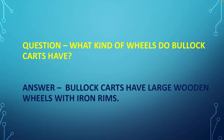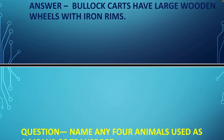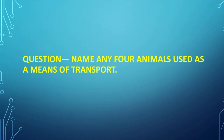Next question: What kind of wheels do bullock carts have? We just saw in the video that the carts had big wheels made of wood. Answer: Bullock carts have large wooden wheels with iron rims.